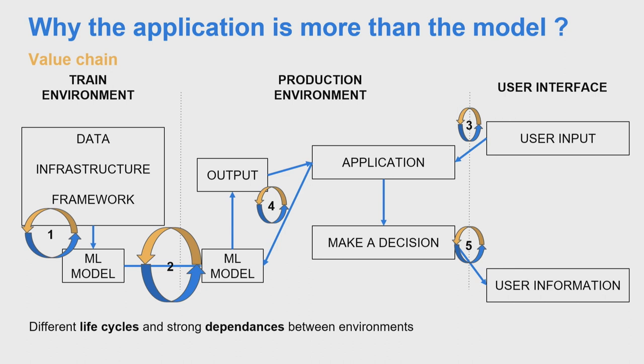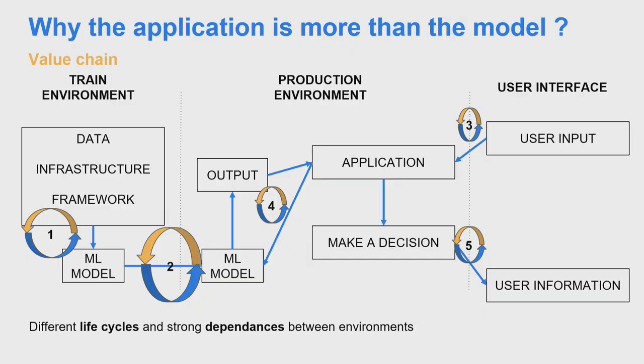I'd like to finish with two pieces of advice if you want to make machine learning applications. First, you need to have code everywhere — automate the entire process of the value chain, not only just the training part. Second, if you want to make this application, start with the right-hand side of the value chain. Even if the model is not good, even if it's just a simple model that always says it's a car, just do it so that you integrate the model into your production environment — and hopefully you can iterate on the model afterwards. If you do so, you're going to be successful building your machine learning applications. I have the Raspberry Pi here, so if you want to play around with it, I'm going to be sticking around today — just feel free to ask me. Thank you.